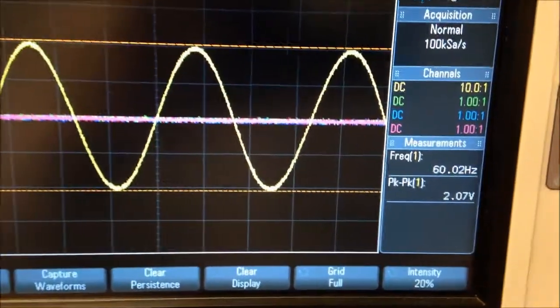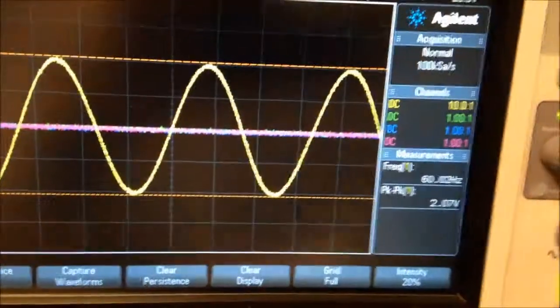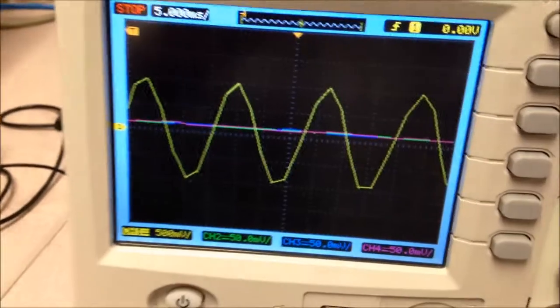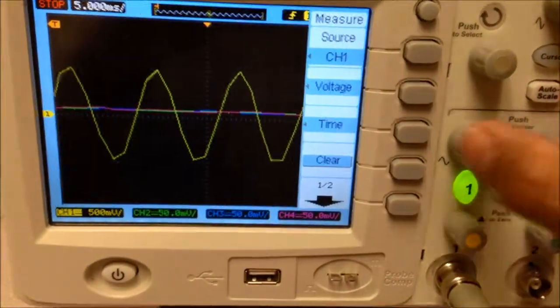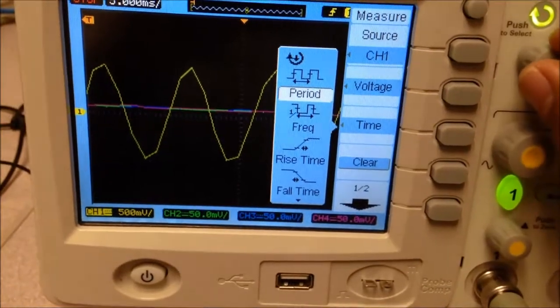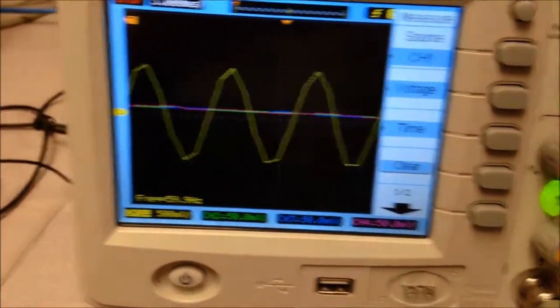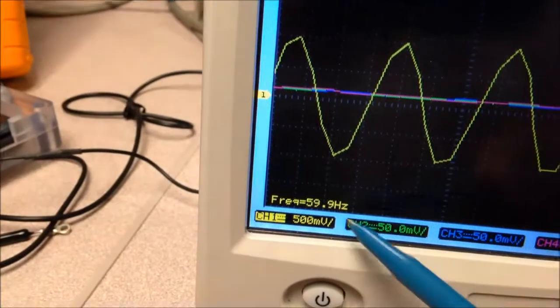In both cases, here, this oscilloscope is measuring 60 hertz, and in this case, on this oscilloscope, I can hit on measure, and I can choose time, frequency, and then it says 59.9 hertz.